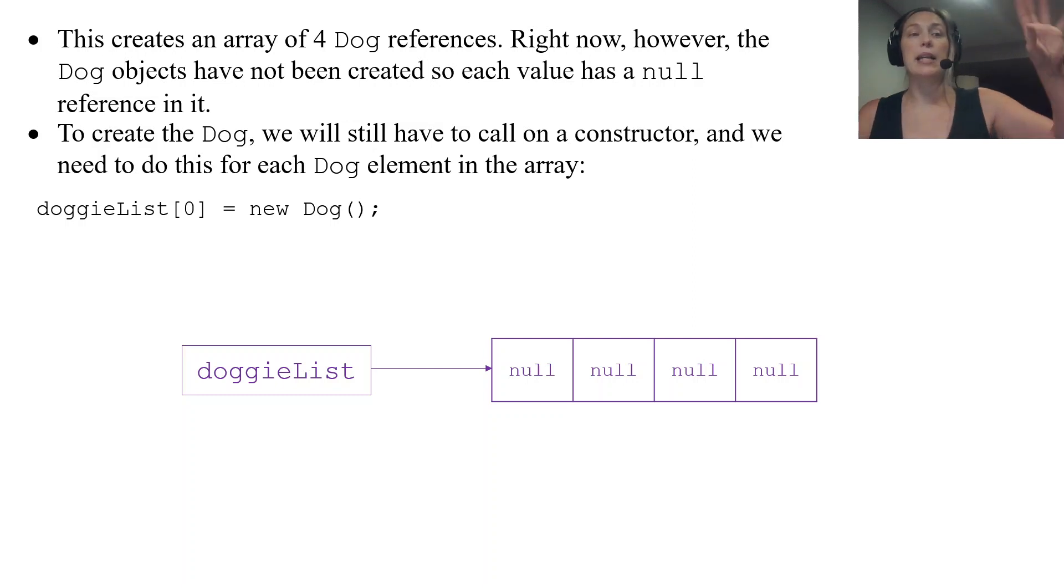What that looks like: this is what we have right now in memory. The code would be doggieList[0] equals new Dog(), using my default constructor. That means at the zero index I have created a new dog with the three default values for my three instance variables: Unknown for name, zero for age, and true because they're a good dog. By default they're a good dog until proven otherwise. Those are the three instance variables. I've created my new dog. I would have to go and do that for each of my indices in order to have them be created.